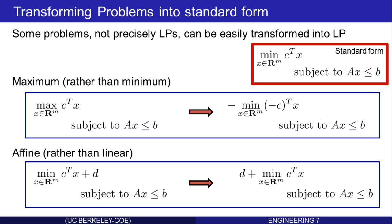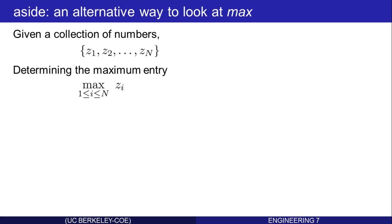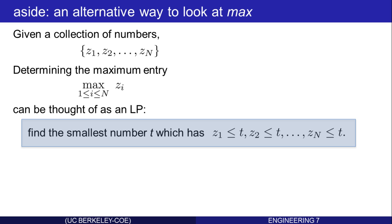Let's lay some groundwork for a more complicated one. Here's an alternative way to look at finding the maximum of a bunch of numbers. Suppose I have a collection of numbers Z1 through Zn, and I want to determine the maximum entry — max over i of Zi. This can be thought of as a linear program itself: find the smallest number T which is larger than all the Zs. Anything larger than the maximum is not the smallest such number, and anything smaller than the maximum is not greater than or equal to all the Zs. Hence, that is exactly the maximum.